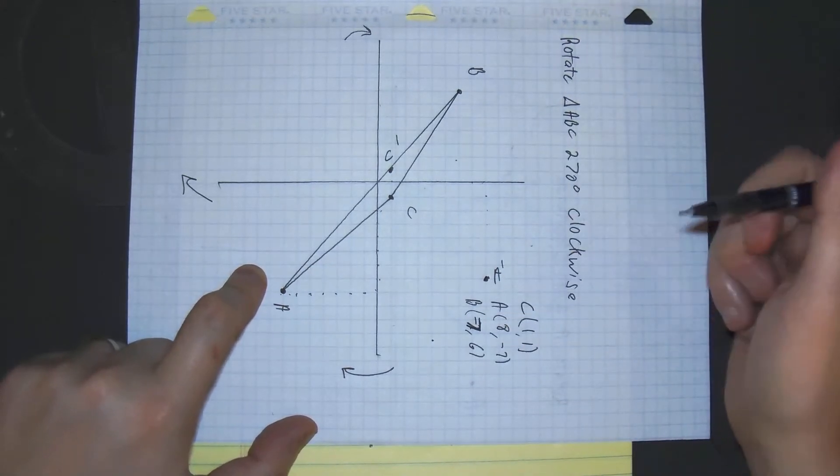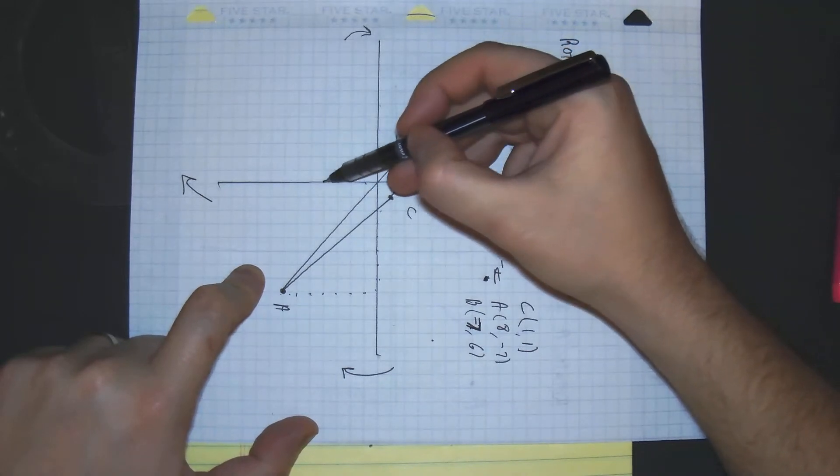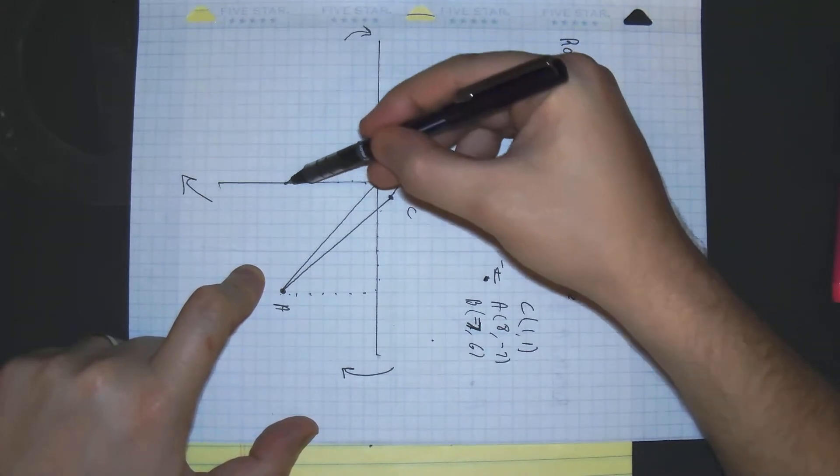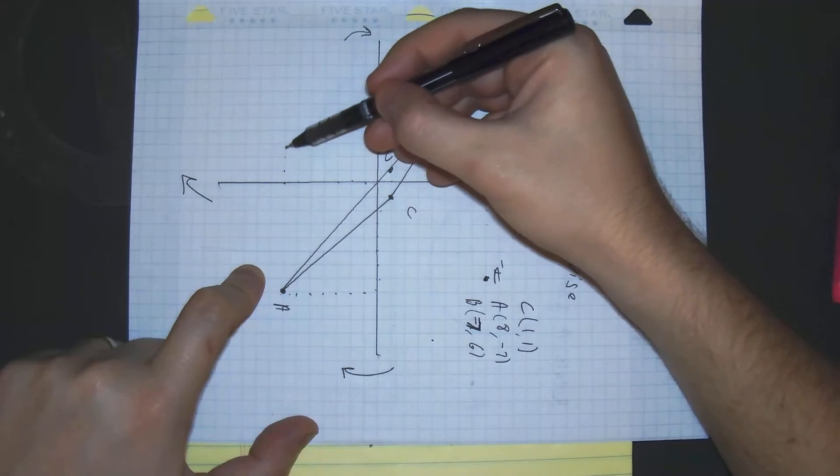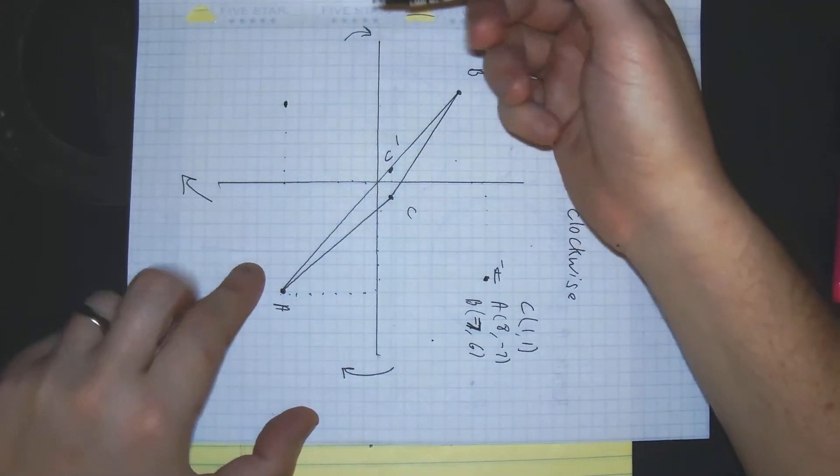And last but not least, B is at negative 7, 6. Counting: 1, 2, 3, 4, 5, 6, 7, and 1, 2, 3, 4, 5, 6. And that's B prime.